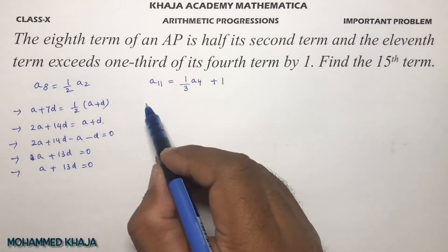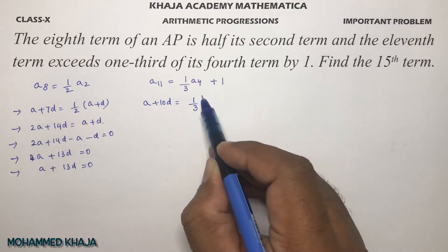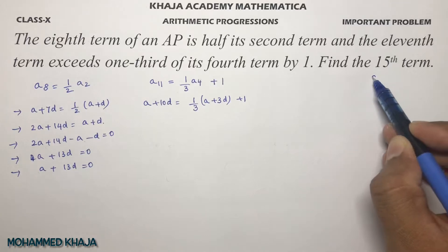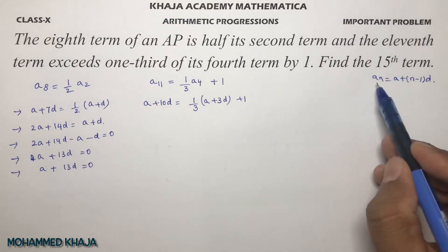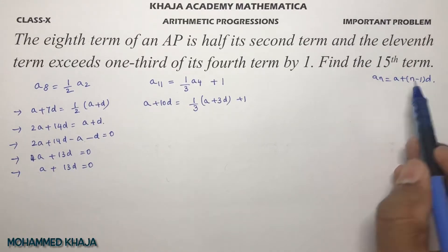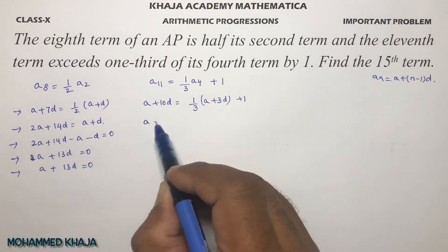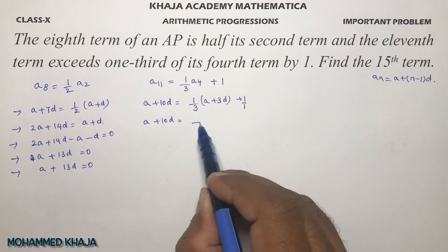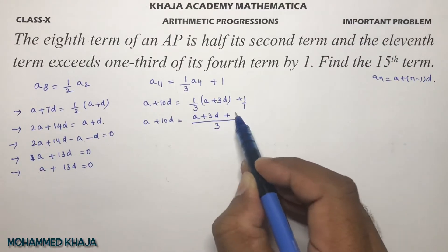Now a₁₁ is a plus 10d, and one-third of the fourth term. The fourth term is a plus 3d because the nth term formula is a plus (n minus 1)d. So a₄ is a plus 3d, and a₁₁ is a plus 10d. When simplifying, don't directly transpose because there's a fraction. Take LCM 3.